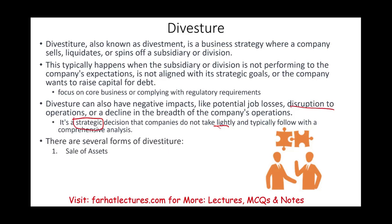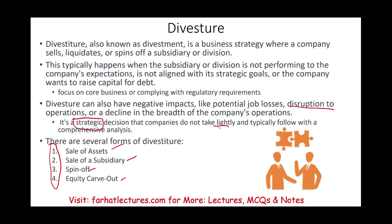There are several forms of divestiture that a company can undertake: one is the sale of assets, two is the sale of the subsidiary, they can do a spin-off, or they can do an equity carve-out. What's going to happen next is I'm going to go over each component, explaining what it is and giving you a real-world example to relate.